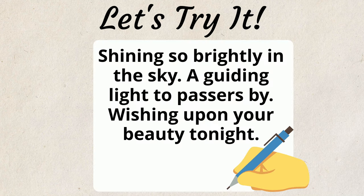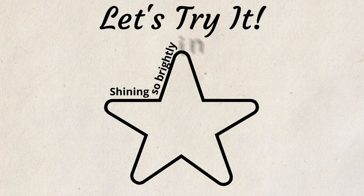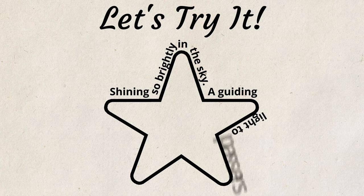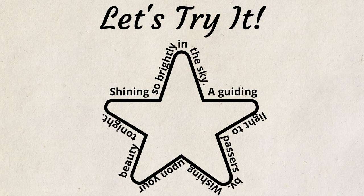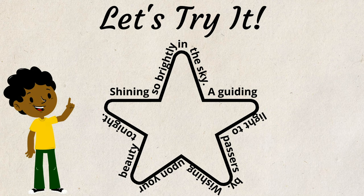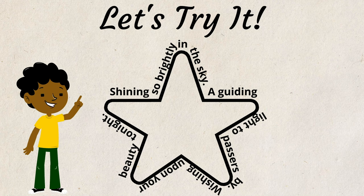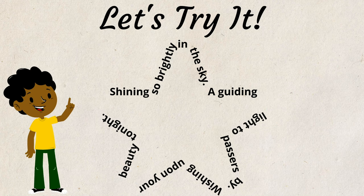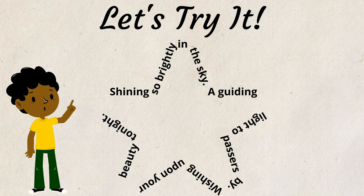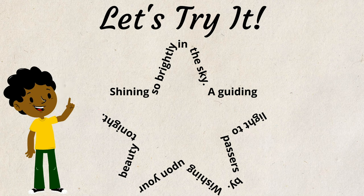Here, I have my poem. I can use the outline of a star to help me shape my words on the outline. Look! That looks so cool! I used the outline of a star and wrote my words around the outline. When I remove the outline, I am left with my shape poem, shaped as a star.